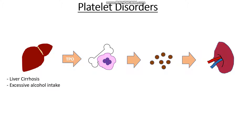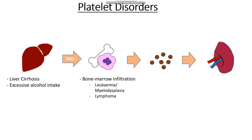Then we could have an issue with the production factory of our platelets — our bone marrow. Things that infiltrate the bone marrow include leukemia, or myelodysplasia which is the precursor to leukemia where we haven't met the cell count to be classified as leukemia. We could have lymphoma, where cancer of our lymph nodes spills into the blood and infiltrates our bone marrow, or myeloma, a cancer of plasma cells inside the bone marrow.